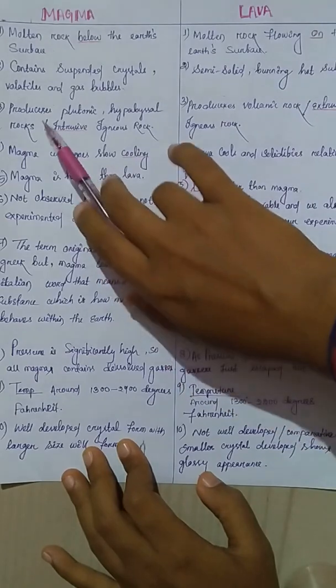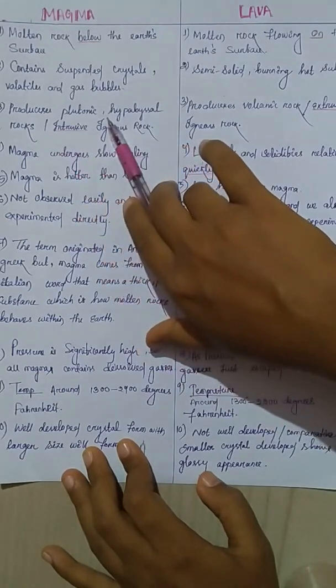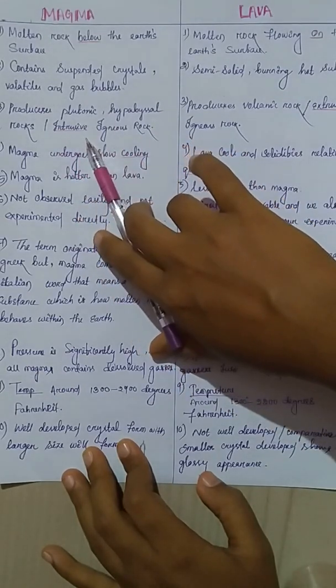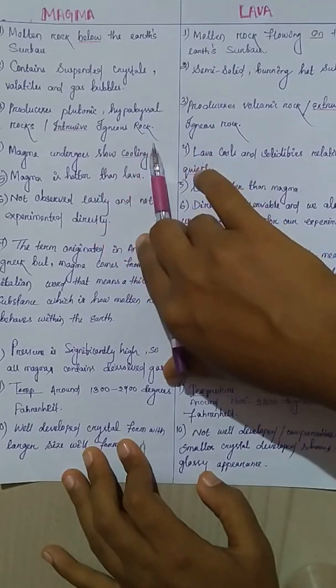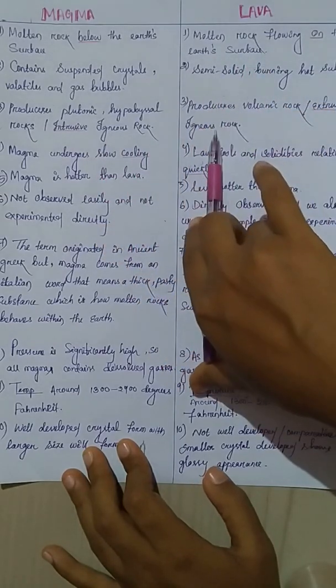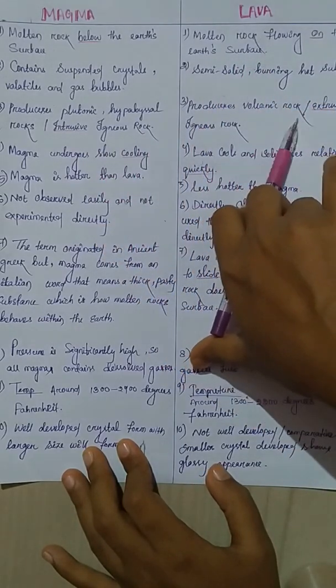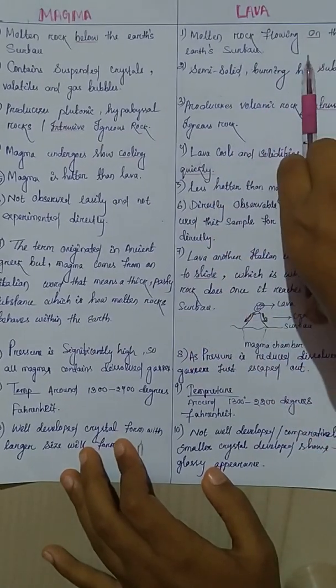In case of magma, it produces plutonic hypabyssal rocks which are intrusive igneous rocks. But in case of lava, we are getting volcanic rocks which are extrusive igneous rocks.